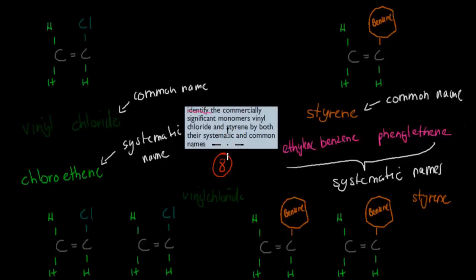Identify the commercially significant monomers, vinyl chloride and styrene, and their systematic and common names. So we have vinyl chloride, this is its common name. This is its structure. You can see it's basically just ethylene. We have one chloride substitute for the hydrogen. We have chloroethene, that's its systematic name. You need to know both the common and the systematic name, and the structure.